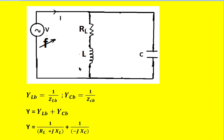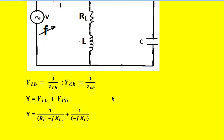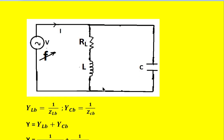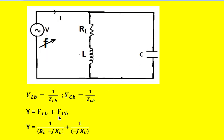Z_LB is the impedance of this branch, that is R_L plus j·ω·L. Similarly, for the capacitive branch, the admittance is equal to 1 divided by Z_CB, where Z_CB equals 1 divided by j·ω·C, or minus j·X_C. Because it is a parallel circuit, the total admittance can be written as Y equal to Y_LB plus Y_CB. So Y equals 1 divided by (R_L plus j·X_L), and replacing Y_CB with 1 divided by Z_CB, that is 1 divided by minus j·X_C.